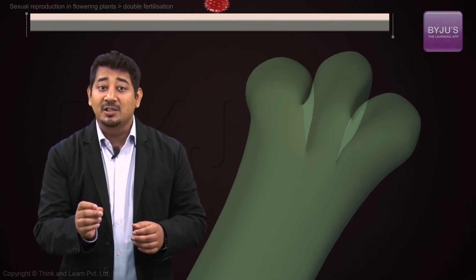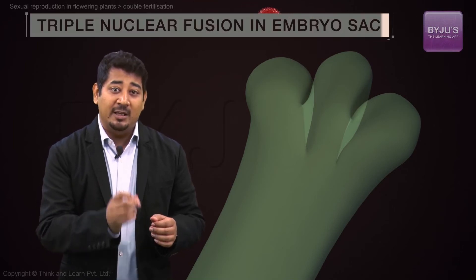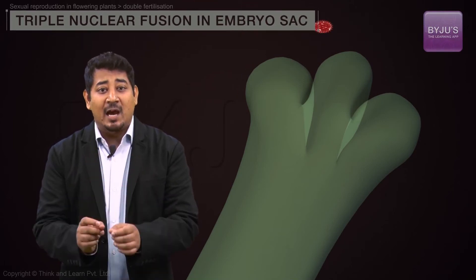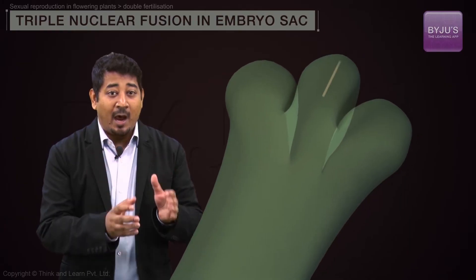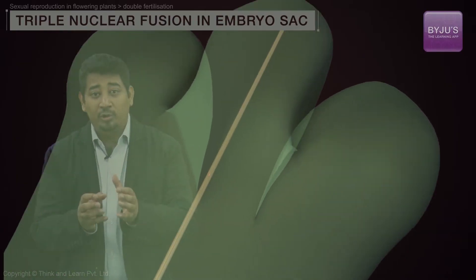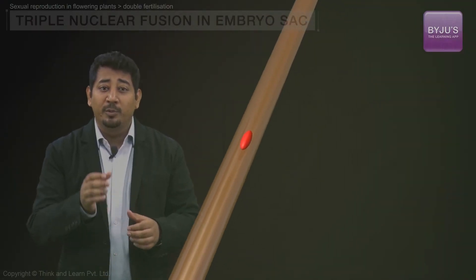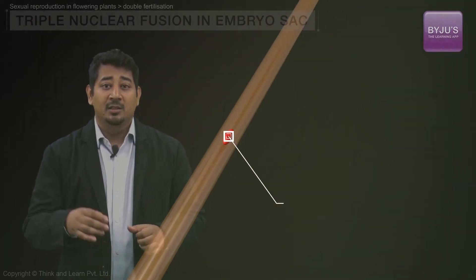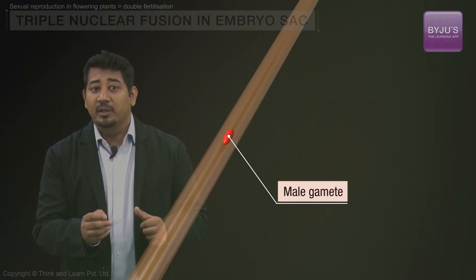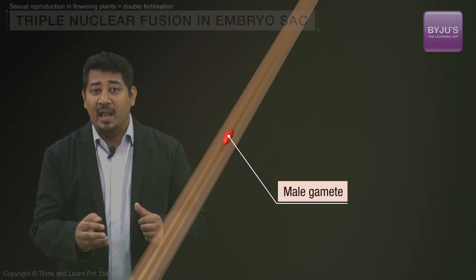Once a pollen grain lands on a compatible stigma, it starts germinating. This is marked by the growth of a pollen tube down the length of the style. The pollen tube carries the male gametes towards the embryo sac.